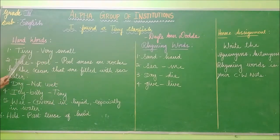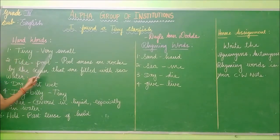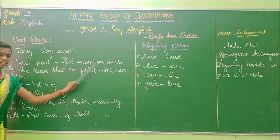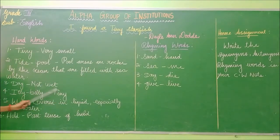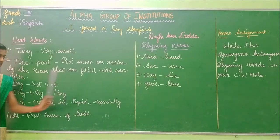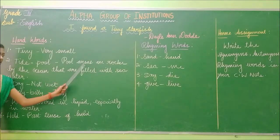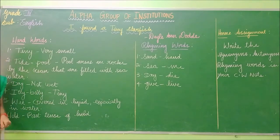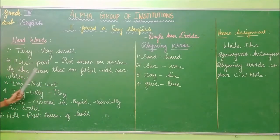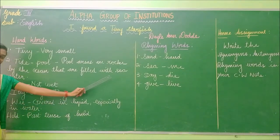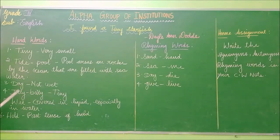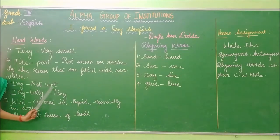Shall we read the vocabulary once again? Tiny — very small. Do it after me: tiny, very small. Tide pool — pool areas on rocks by the ocean that are filled with sea water. That means the area that is filled with sea water on the rocks. Tiny, very small. Tide pool — pool areas on rocks by the ocean that are filled with sea water. Dry — not wet.